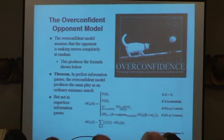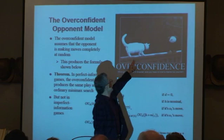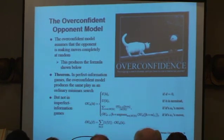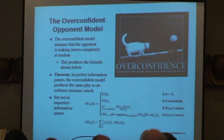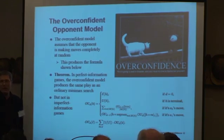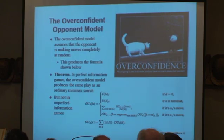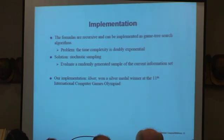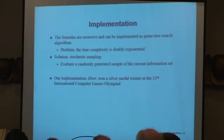Here's another opponent model: the overconfident opponent model — this is a cat trying to attack an eagle. The overconfident model assumes that the opponent is making moves completely at random, and that produces this formula here. We have a theorem showing that, surprisingly enough, in a perfect information game this model produces exactly the same play that the paranoid model produces, but not in imperfect information games — it'll do things differently there. The formulas are recursive and can be implemented as game search algorithms. The main problem is that the time complexity is doubly exponential, but you can use stochastic sampling to generate a random sample of the information set.